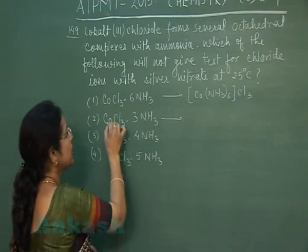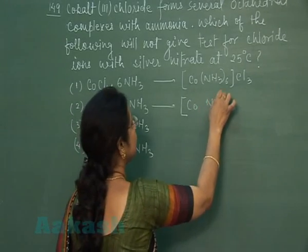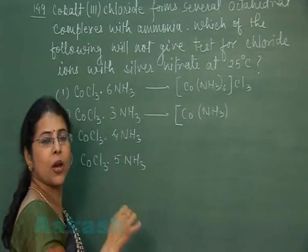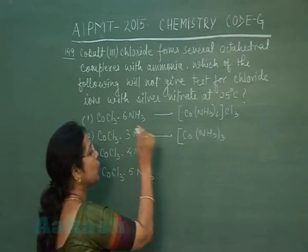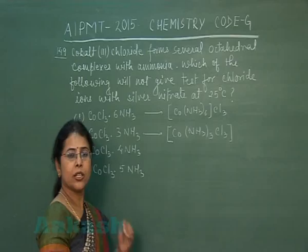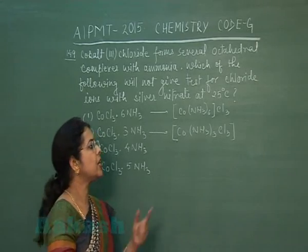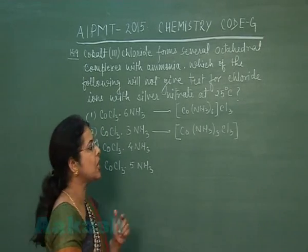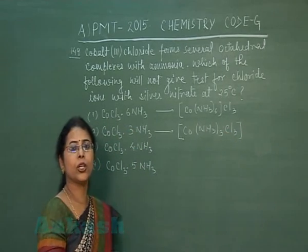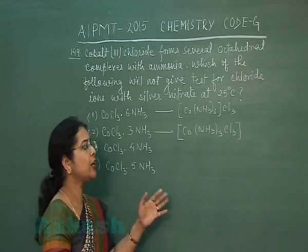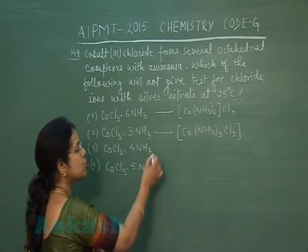In the second option, CoCl₃·3NH₃: Co is the central metal, three ammonia molecules are present as ligands. Since the complex is octahedral, the remaining three coordination sites are filled by chloride ions as ligands. Chloride ions can behave as ligands or be present as free ions. Since all three chloride ions are present as ligands, none are present as free chloride ions. This complex will not give a white precipitate when AgNO₃ is added, so this should be the correct option.